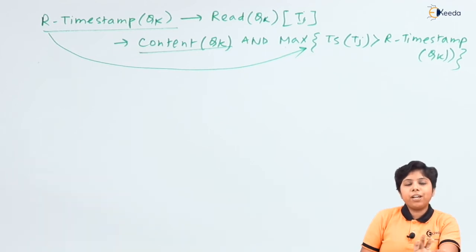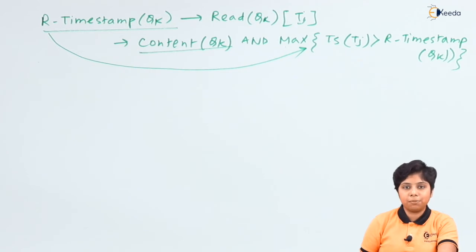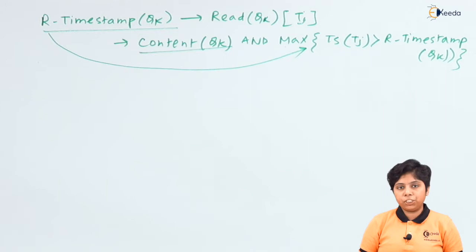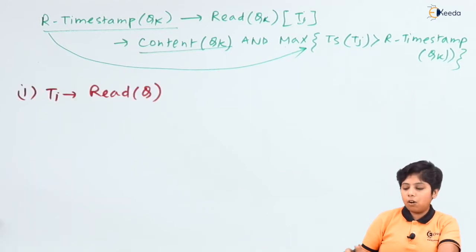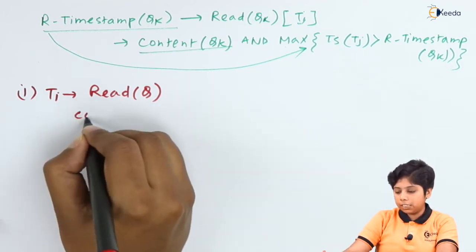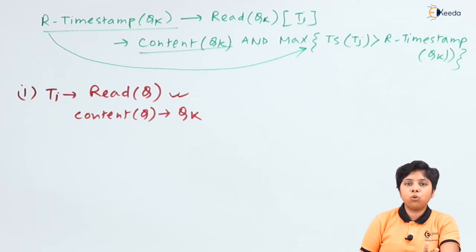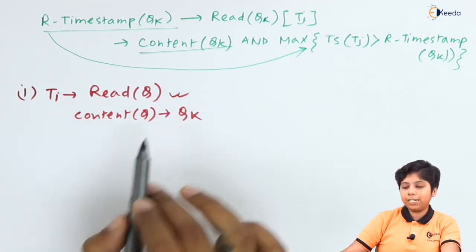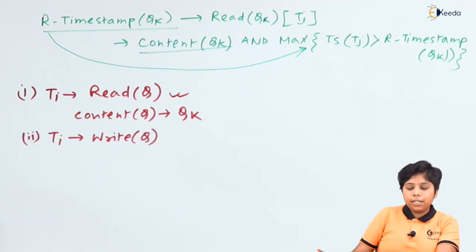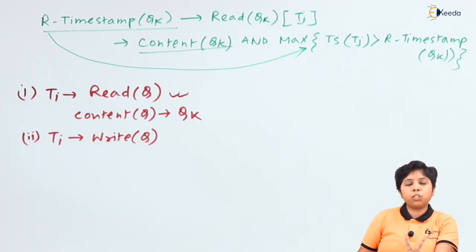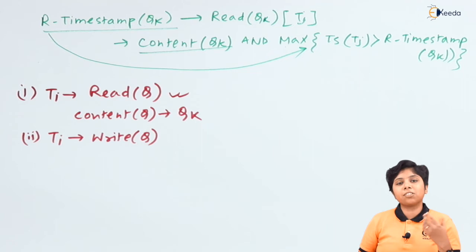Now we will go for the protocol. This concurrency control mechanism ensures serializability and conflict serializability. When T_i issues read and write operations, we have the following conditions. If T_i issues read(Q), it will find the content of Q_k stored by that version of Q and read that value. Multi-version schemes control the versions of Q such that it reads only the latest version that has been written. If T_i issues a write operation, there are two possible conditions: it is writing an obsolete value or it is writing a new value.